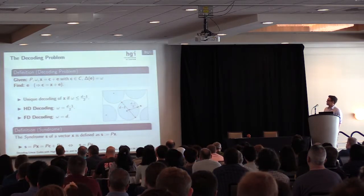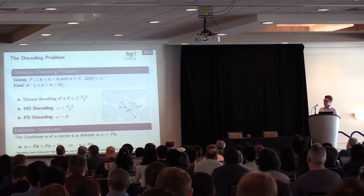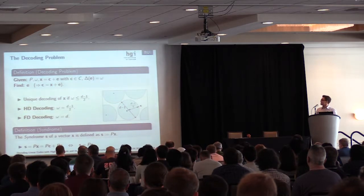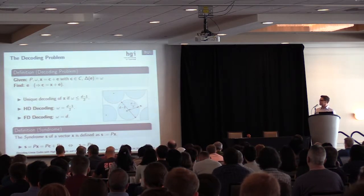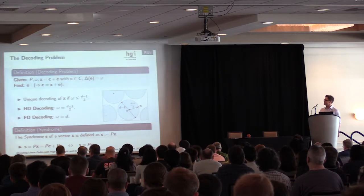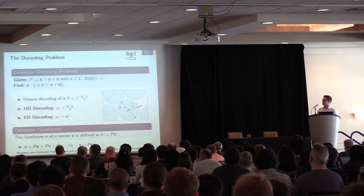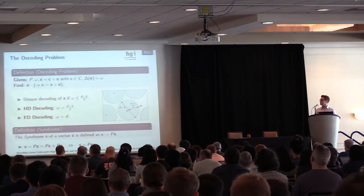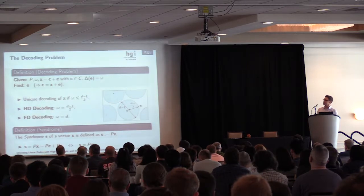If you take a look at the picture on the right side now, the dots mark some code words, and around those code words there are circles with diameter t minus one. If some vector x lies in such a circle, then the decoding to the code word c is unique.